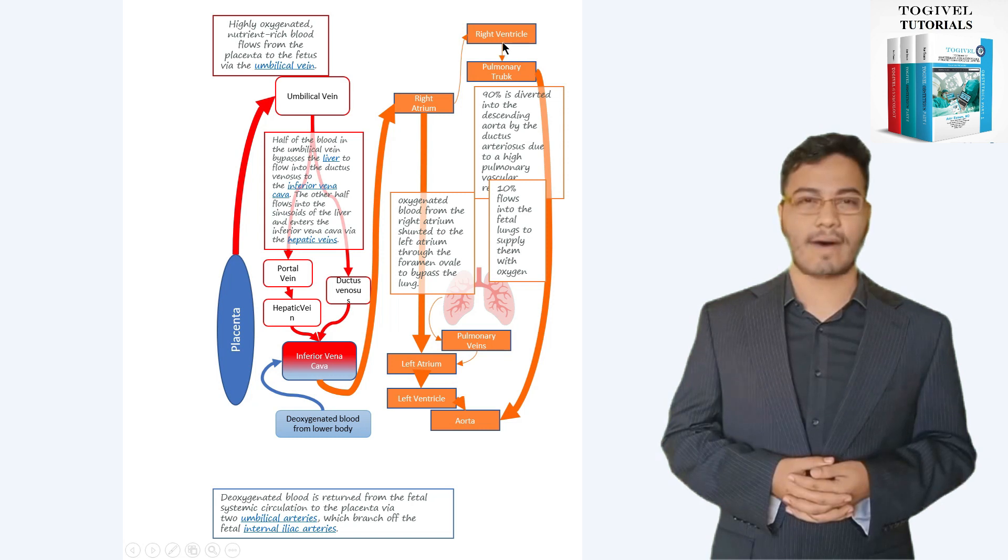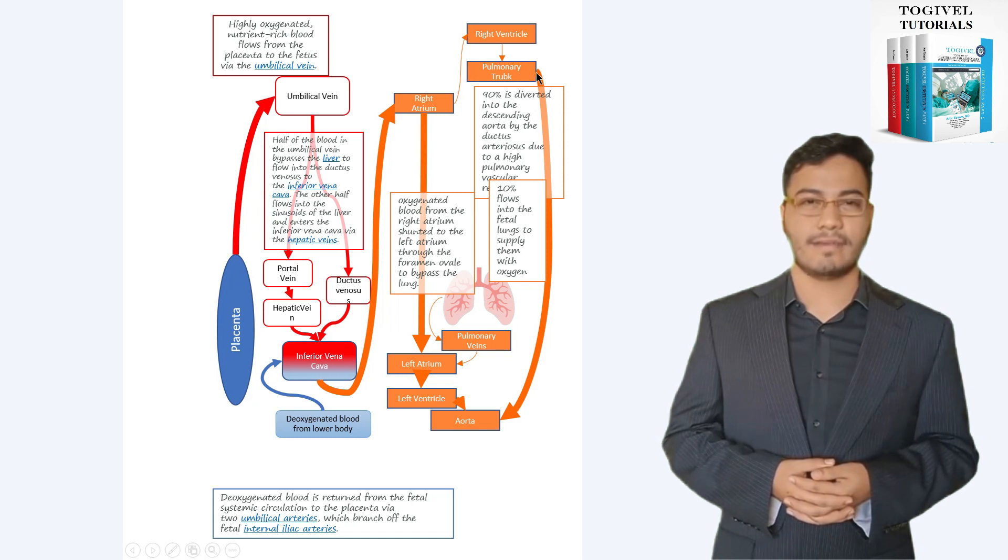As a result of this blood flow pattern, blood in the right ventricle is 15-20% less saturated than blood in the left ventricle. Almost 90% of blood pumped from the right ventricle is shunted through the ductus arteriosus to the descending aorta. Only about 10% goes to the lungs.